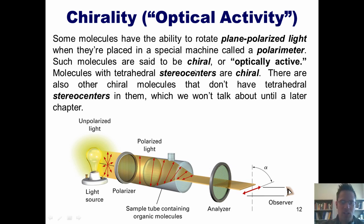Such molecules are said to be chiral, or optically active. Now molecules with tetrahedral stereocenters are chiral. There are also some other types of chiral molecules that don't have tetrahedral stereocenters in them, which we won't talk about until a later chapter.